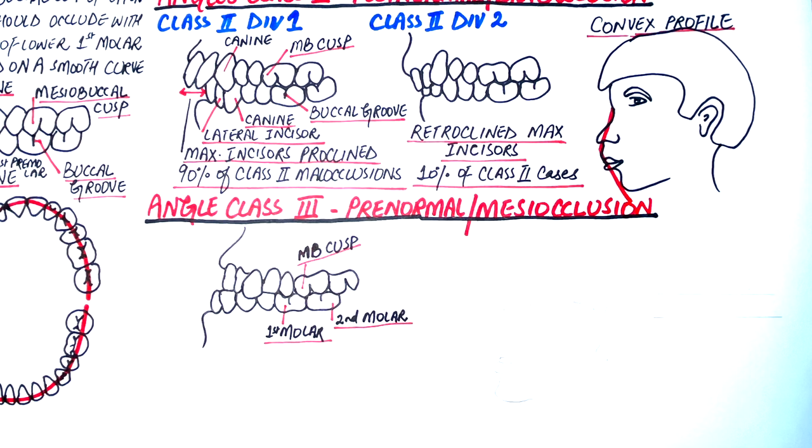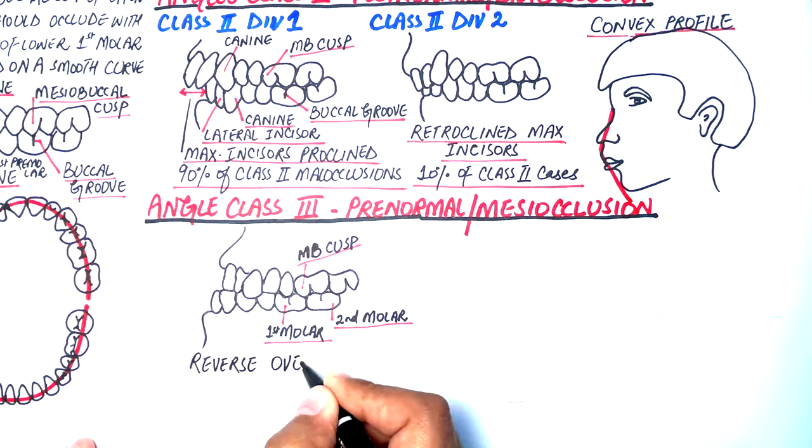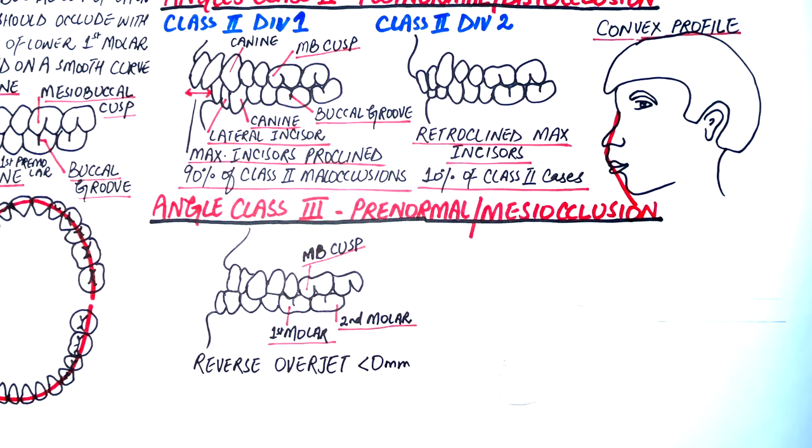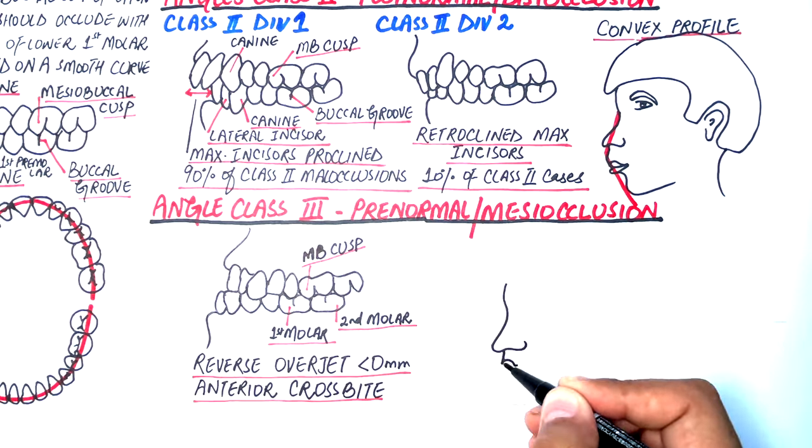In cases of Angle's Class 3 malocclusion, the overjet is often reversed, which is less than 0 mm, implying an anterior crossbite. The patient will have a concave facial profile.